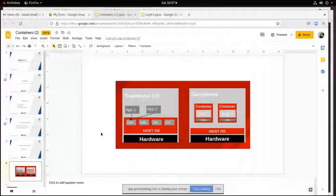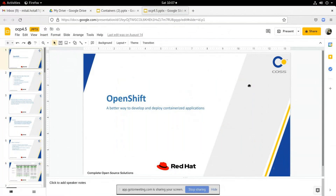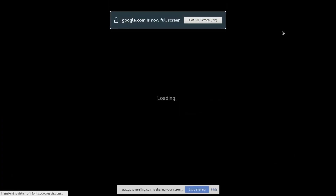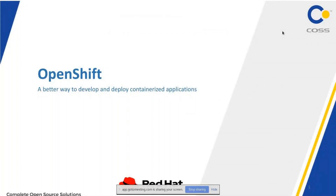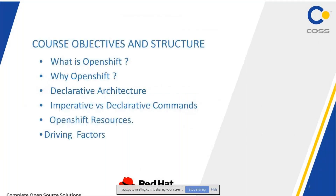Red Hat OpenShift container platform is a set of modular components and services built on top of Red Hat Core operating system and Kubernetes. It adds platform-as-a-service capabilities such as remote management, increased security, monitoring and auditing, application lifecycle management, and a self-service interface for developers. That's why it is a better way to develop and deploy containerized applications.